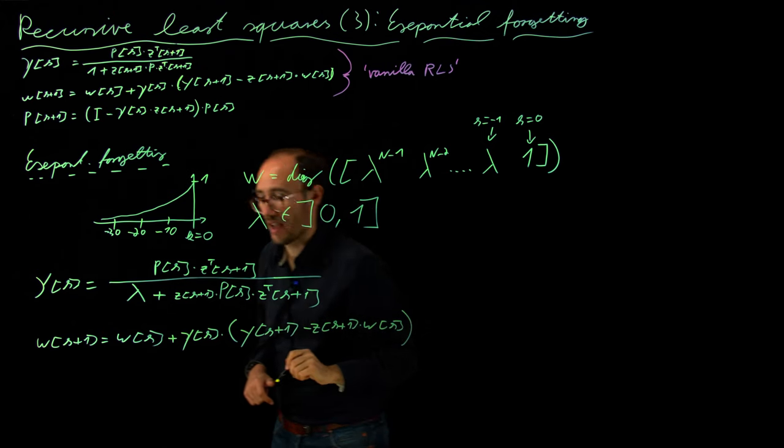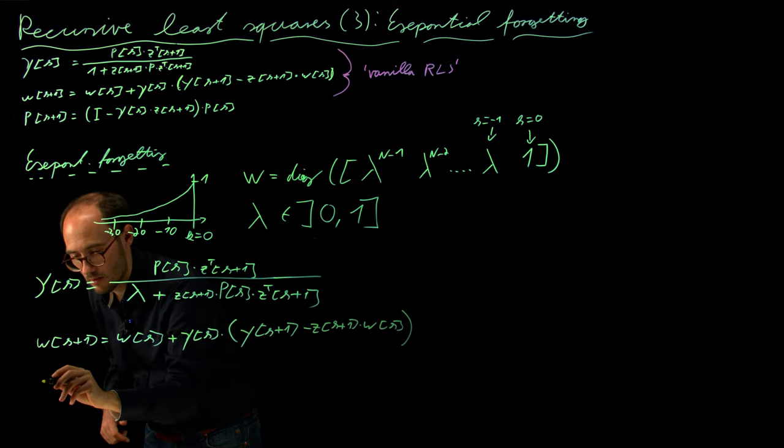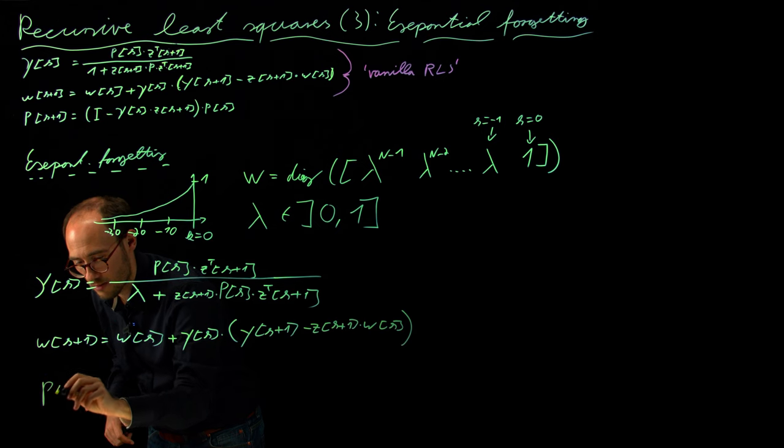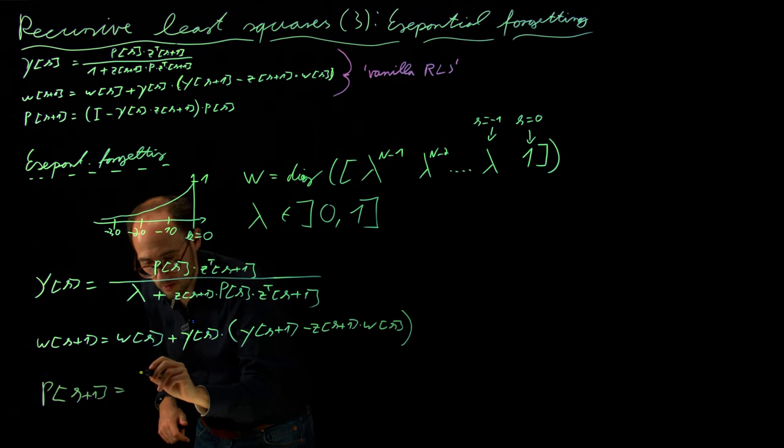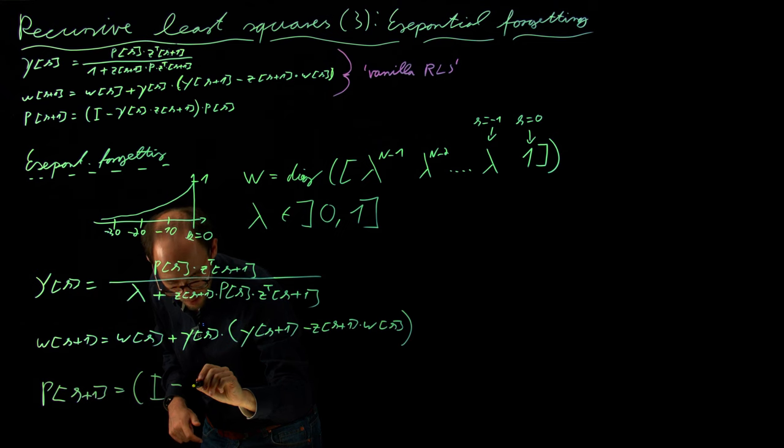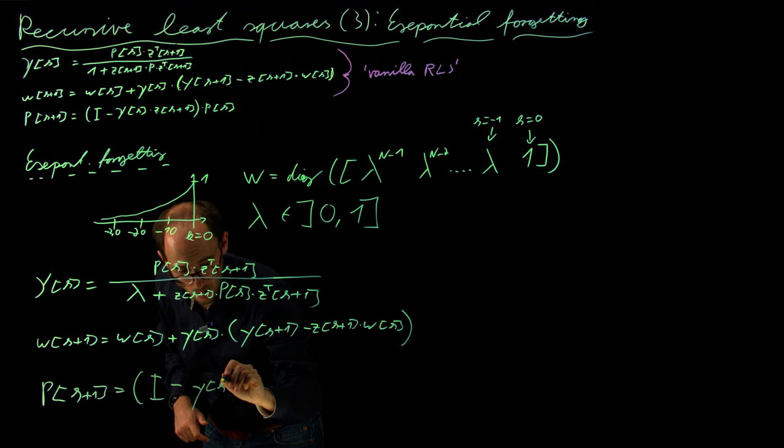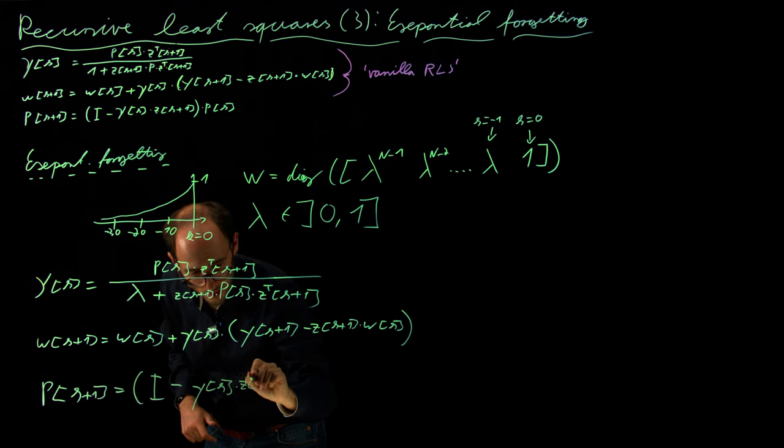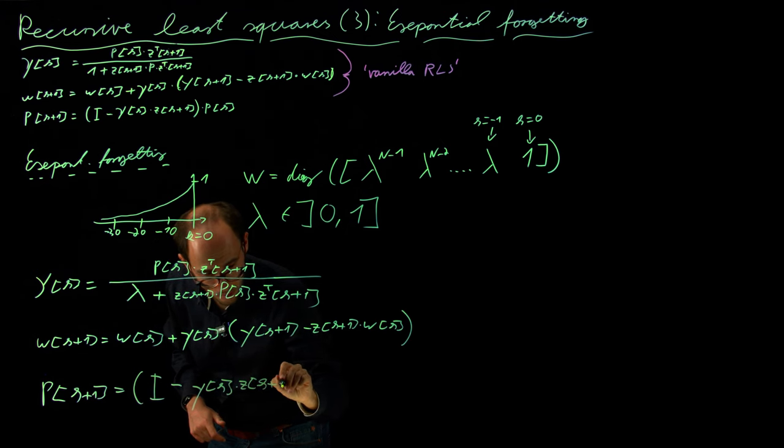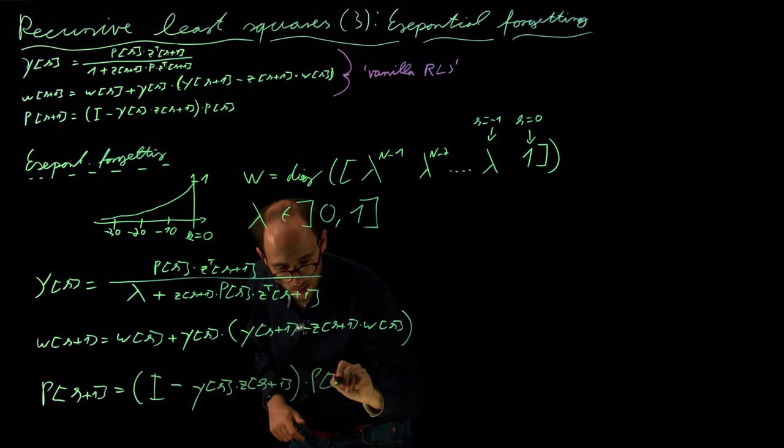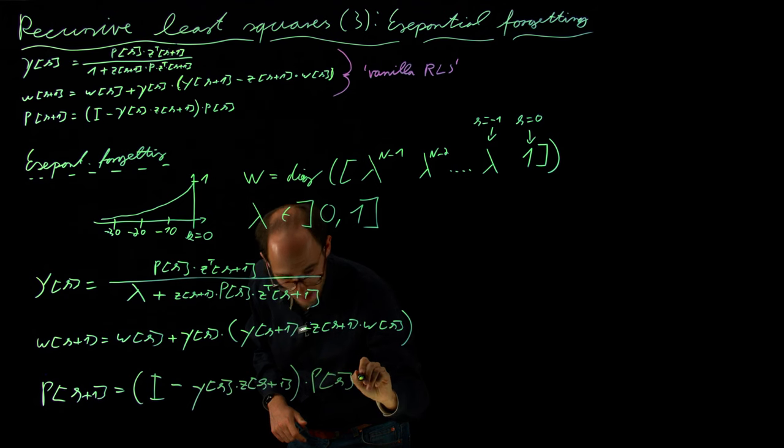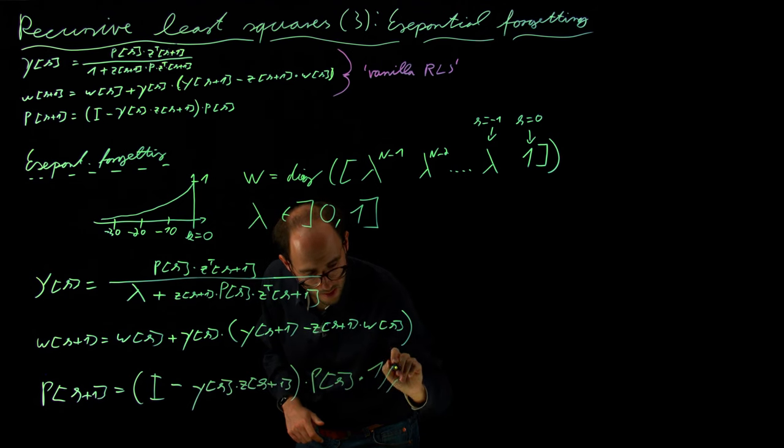and then the update to the normalized covariance matrix, pk plus 1 is equal to the identity matrix minus y of k times z of k plus z of k plus 1 times pk